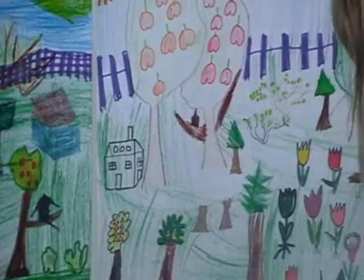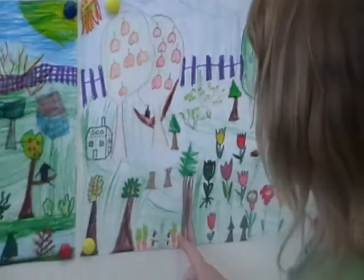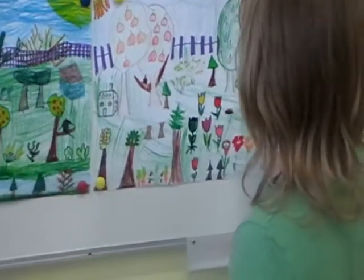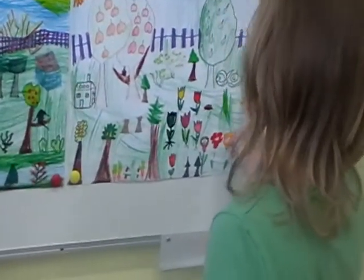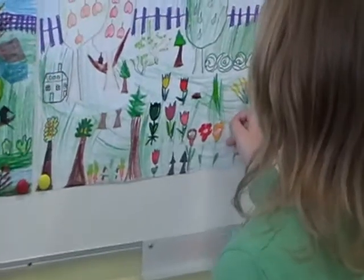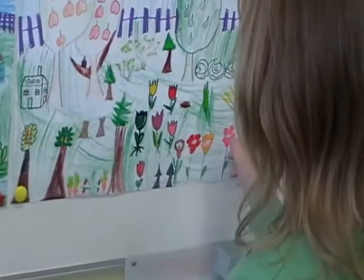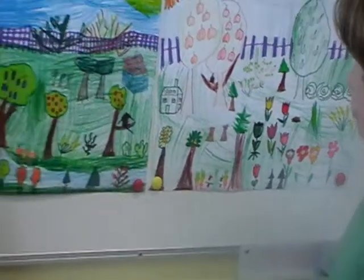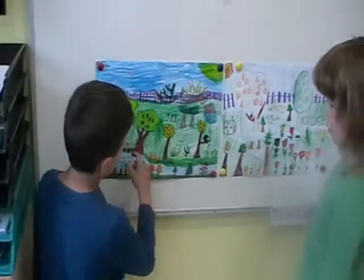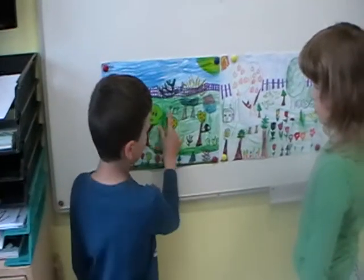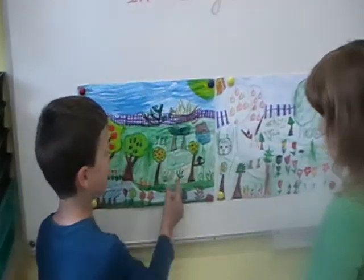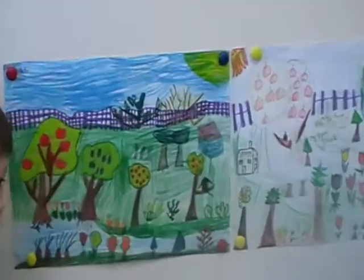There are one, two, three carrots. And one, two, three, four, five, six beans. There are one, two, three, four, five normal trees.